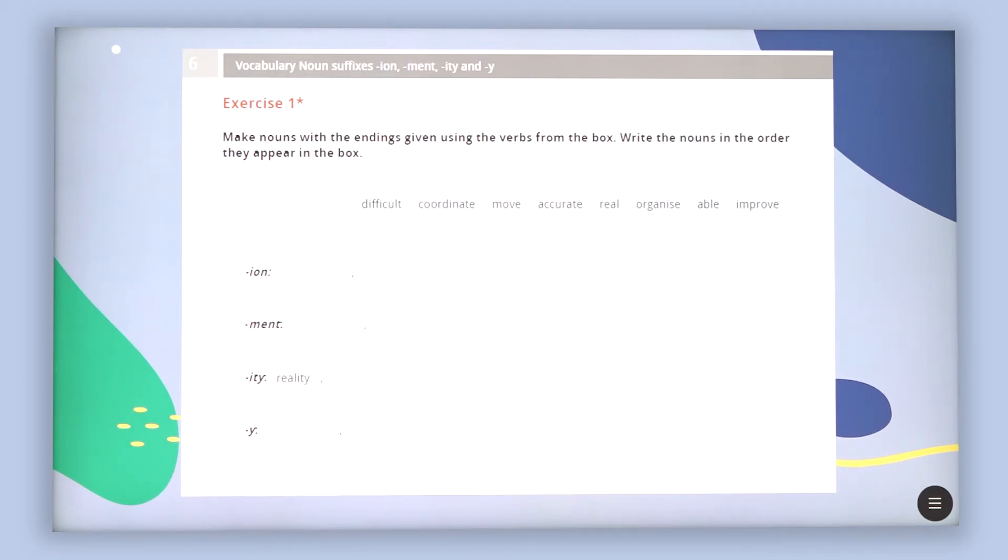Vocabulary, noun suffixes. Exercises continue with making nouns with the endings given using the verbs from the box. Write the nouns in the order they appear in the box. So the verbs or the adjectives that you are going to create from the nouns difficult, coordinate, move, accurate, real, organize, able and improve are found below.